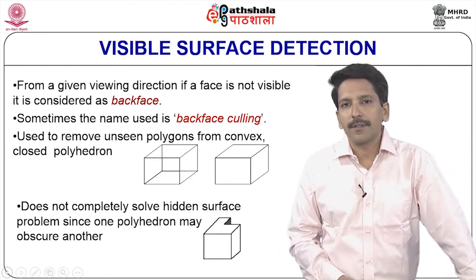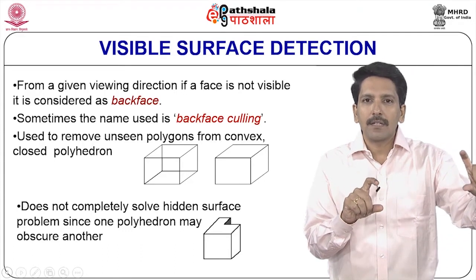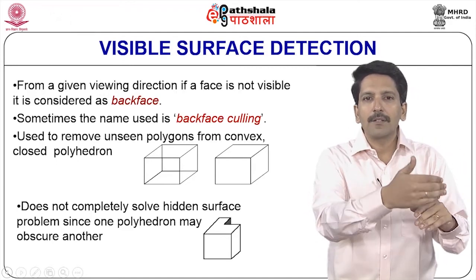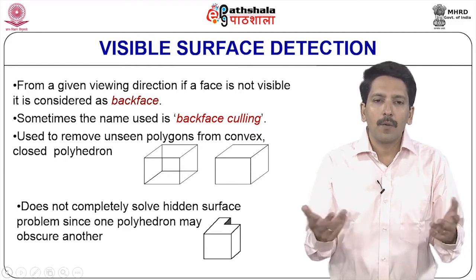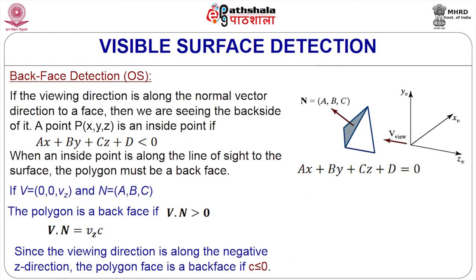As you can see in the slide, a cube is given, and imagine your cube is oriented such that you can see only 3 faces of it. The remaining 3 faces or planes of the cube are not visible. We do not include them at all in the picture, so we can avoid a lot of processing, manipulation, and time. The first visible surface detection method is back face detection, categorized under object space methods (indicated as OS in the slide). We will take examples for object space methods and later see examples for image space methods as well.